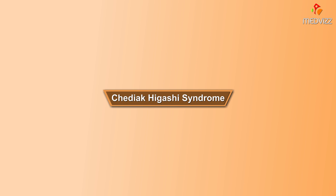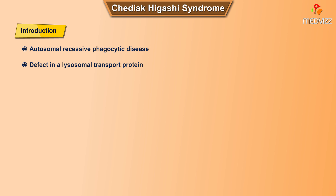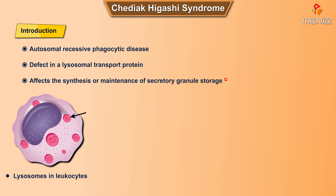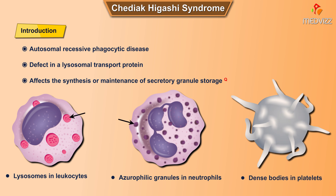Chediak-Higashi syndrome. Let's have a look at the introduction. Chediak-Higashi is an autosomal recessive phagocytic disease with a defect in a lysosomal transport protein that affects the synthesis or maintenance of secretory granule storage in various cells, such as lysosomes in leukocytes, azurophilic granules in neutrophils, and dense bodies in platelets.